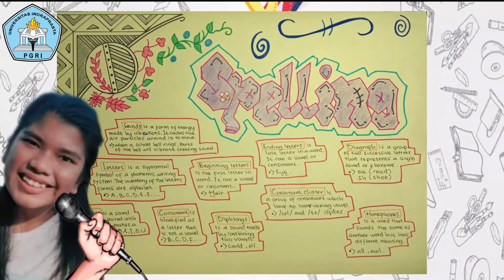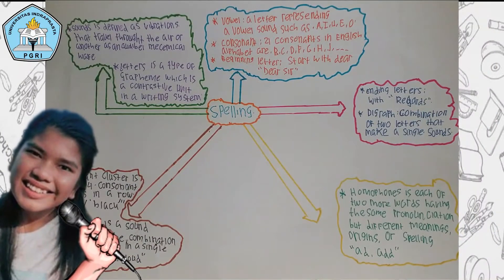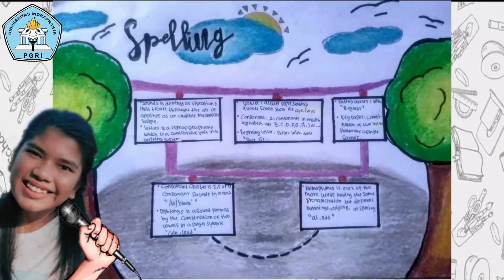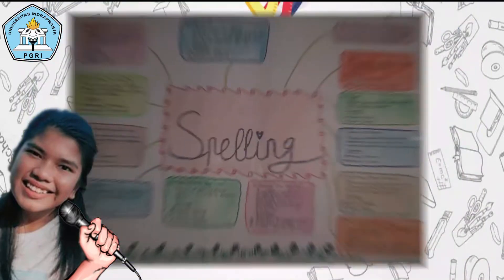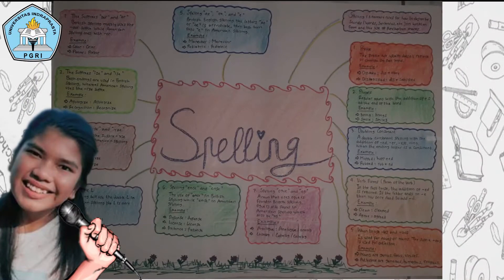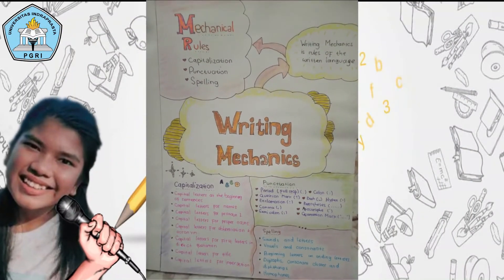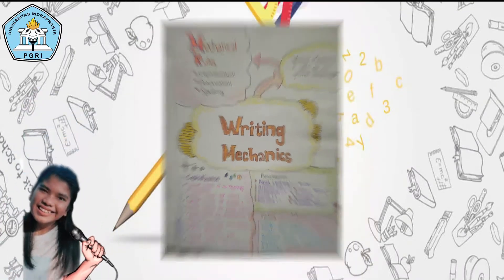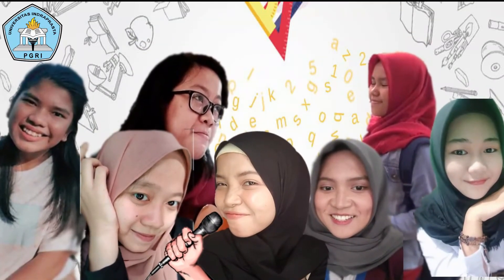Example of spelling: the first is vowels — a letter representing a vowel sound such as A, I, U, E, O. The second is consonants — there are 21 consonants in the English alphabet, such as B, T, D, F, G, H, and others.